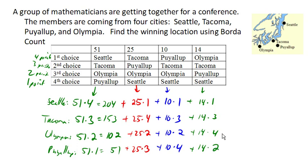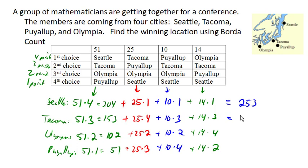Adding those all up, Seattle earns 253 points. Tacoma earns 325 points. Olympia earns 228 points. And Puyallup earns 194 points. The winner under this election is the choice with the highest number of points, so the winner is Tacoma.